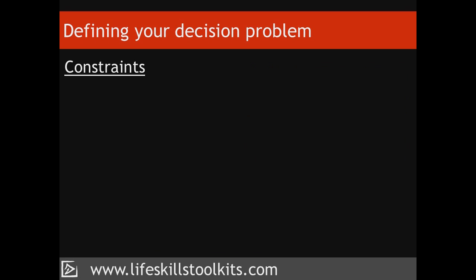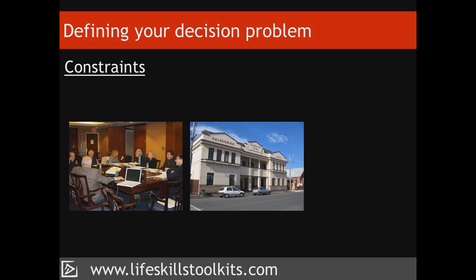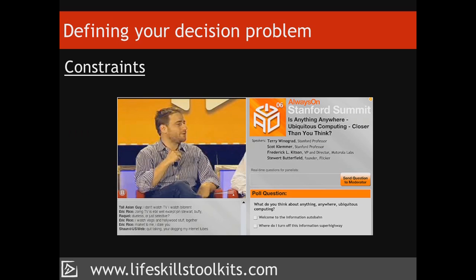Constraints. Imagine that you're trying to decide when to hold an off-site two-day planning meeting for your work colleagues. Your problem's constraints are that it 1) involves a meeting, 2) is off-site, and 3) lasts two days. In order to get the planning done, does it have to happen off-site? Does it require a meeting? And does it require two days? Losing one or more of these constraints, especially when they're not necessary or important, creates a whole new set of options that you may not have considered. While constraints can be useful, check to see if they're misinforming you about the nature of the problem.